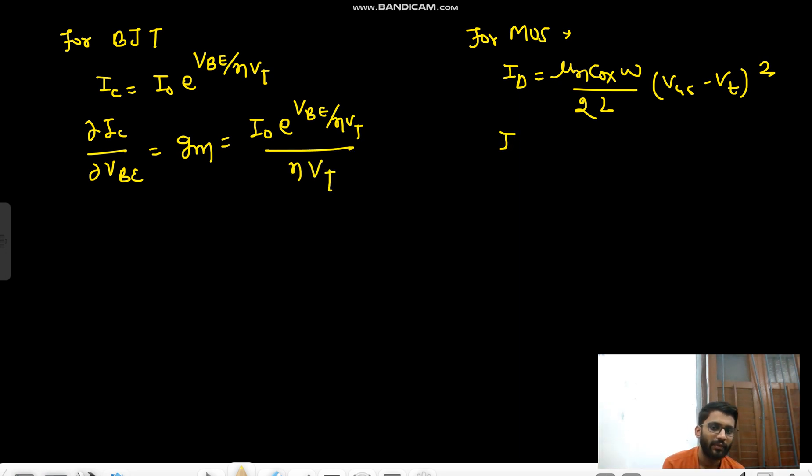And this would be del_ID/del_VBE—del_ID/del_VGS actually—that is gm. That will be equals to mu_n·Cox·(W/L)·(VGS - VT).